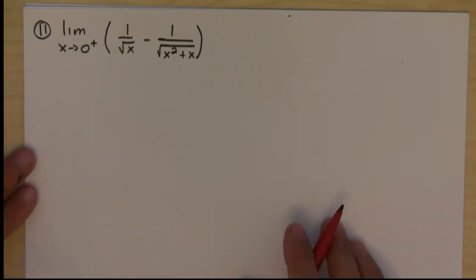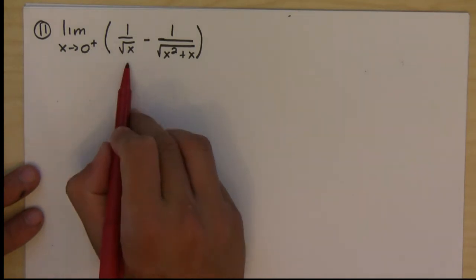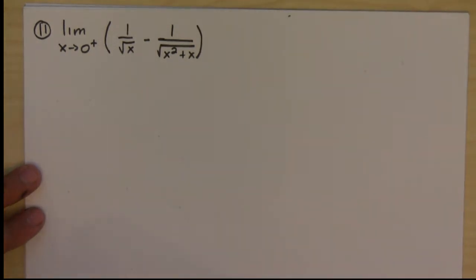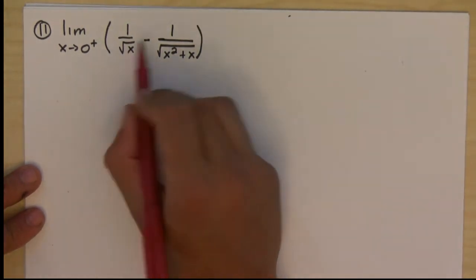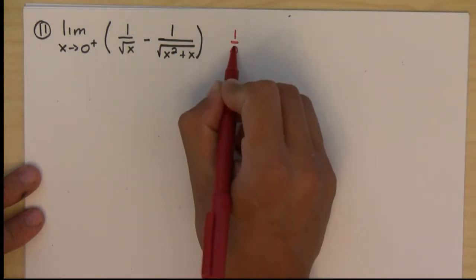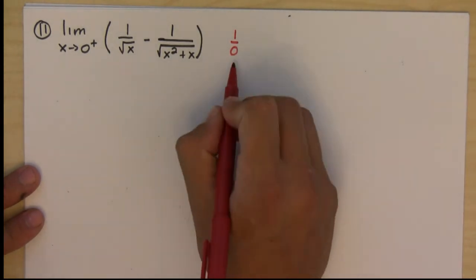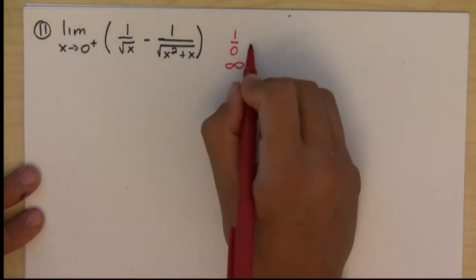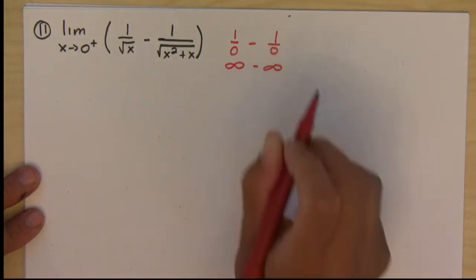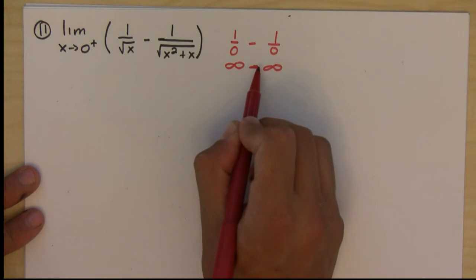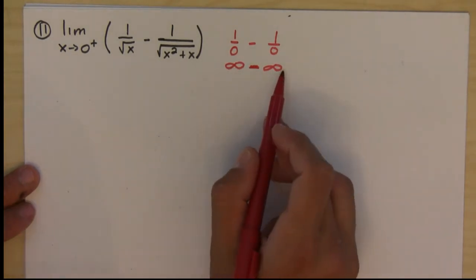Okay, so this looks like quite a tricky problem. We're approaching 0 from the right, and if we try plugging it in, we would get 1 over 0, which is interpreted as infinity, minus another 1 over 0, which is also interpreted as infinity. So this is another indeterminate form of the type infinity minus infinity.